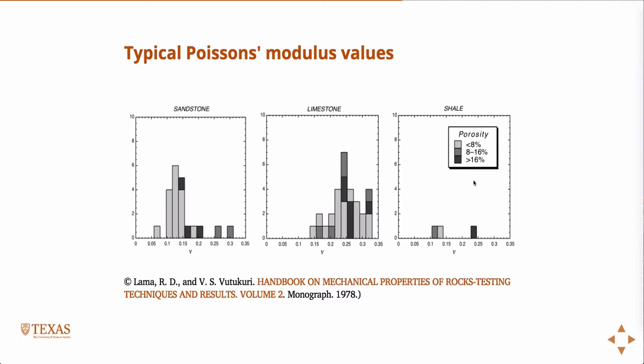Unconfined compressive strength is easily the most common experiment done on geomaterials. The lesson learned here is that you need to do a material experiment if you have a given rock. If you have nothing, you can estimate something, but if you actually want to do real calculations, you need to know what the real properties of the rock are because it's not steel — it's not something that you can have a good guess at.